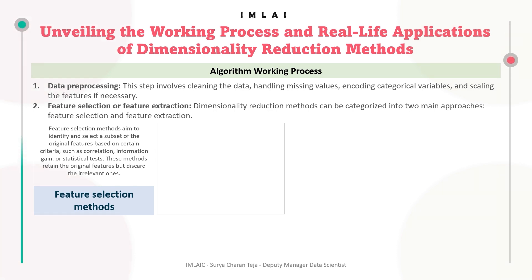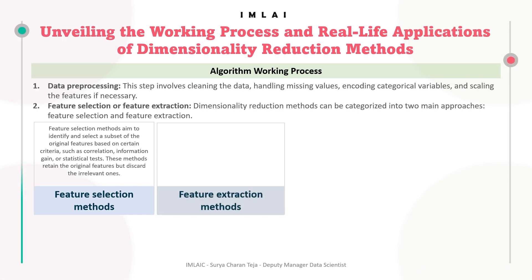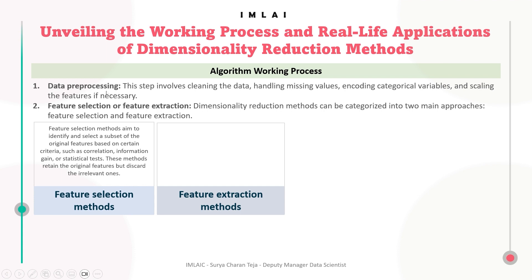Feature selection methods fundamentally target identifying and selecting a subset of the original features based on certain criteria. These methods retain the original features but discard the irrelevant ones. The methods we have seen under feature selection can also be called dimensionality reduction methods.